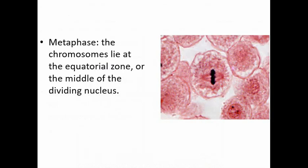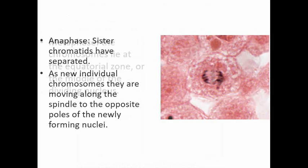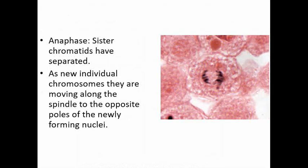In metaphase you'll see the chromosomes are lying at the equatorial zone or the middle of the dividing nucleus. Then in anaphase you'll see a cell where the sister chromatids have separated. As these new individual chromosomes they are moving along the spindle to the opposite poles of the newly forming nuclei.